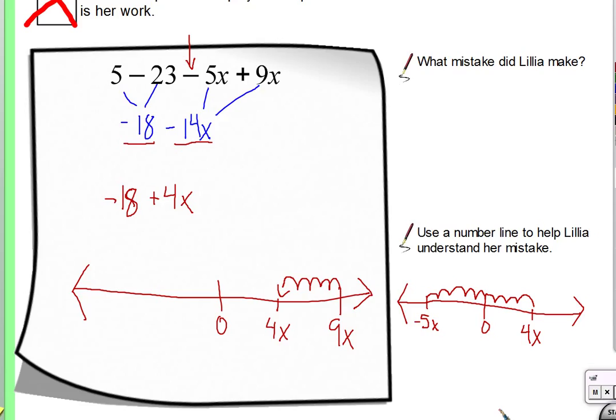Either way we go, we get 4x. Okay. Which is showing us the commutative property of addition. Okay. I'm adding a negative 5x and a positive 9x. And either which way I look at it, 9x minus 5x, 4x. Negative 5x plus 9x, 4x. Okay. All right.